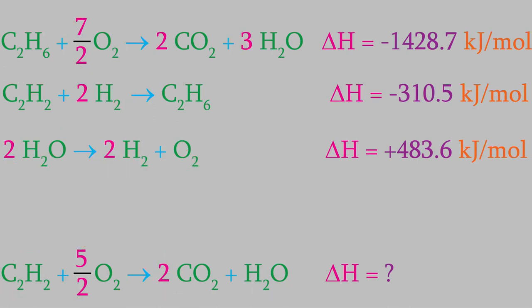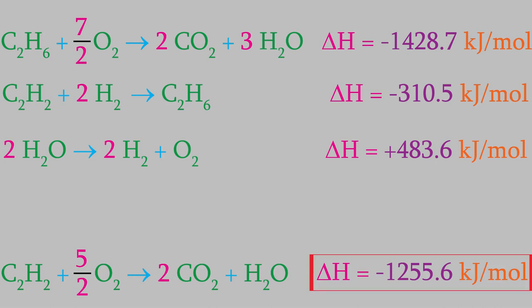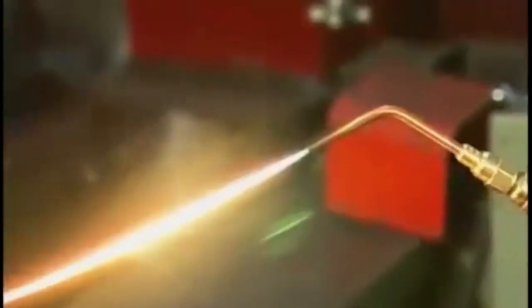We're done manipulating the reactions. Hess's Law tells us to add the enthalpies together. Summing the three enthalpies gives negative 1,255.6 kilojoules per mole. This is a negative number, confirming the reaction is exothermic — which makes sense, since burning acetylene is known to give off a great deal of heat and light.